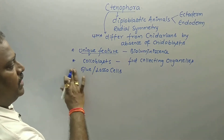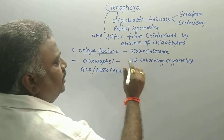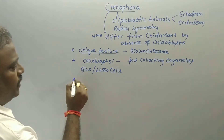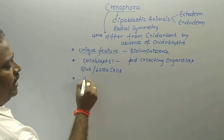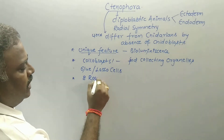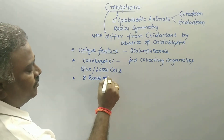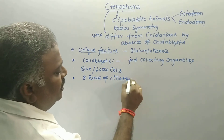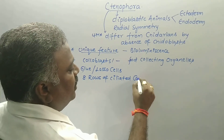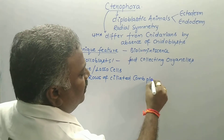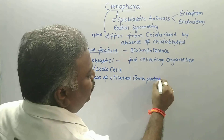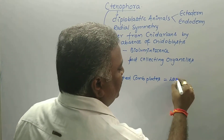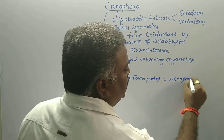Coloblasts, or glue cells, or lasso cells, are useful for food collection and capturing prey. Ctenophores also possess eight rows of ciliated comb plates, which are very important for locomotion.